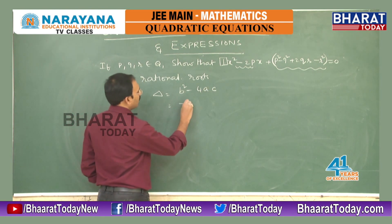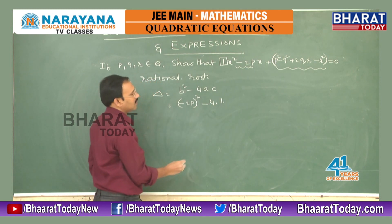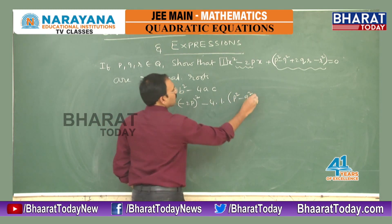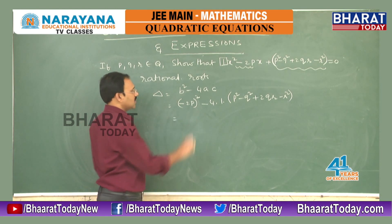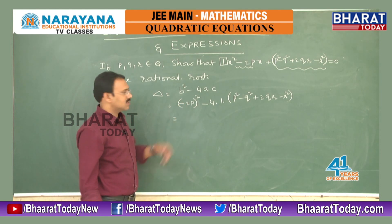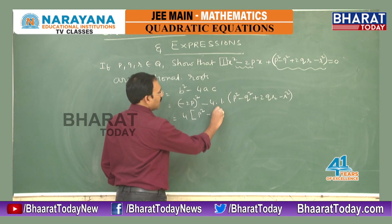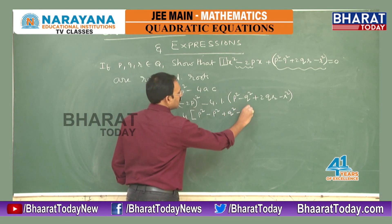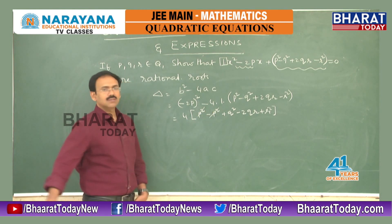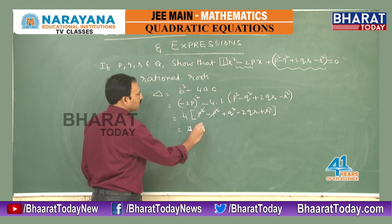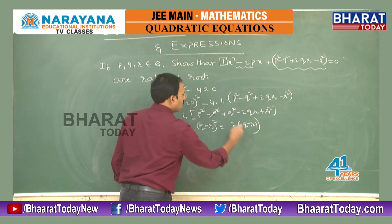B² means (-2P)² minus 4 times A (which is 1) times C (which is P² - Q² + 2QR - R²). This gives 4P², and taking 4 common, we get 4[P² - P² + Q² - 2QR + R²]. The P² terms cancel, leaving 4(Q - R)², which equals [2(Q - R)]².